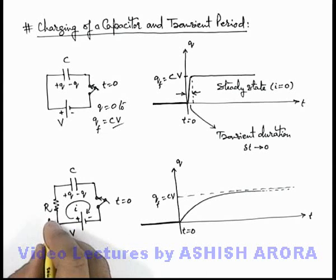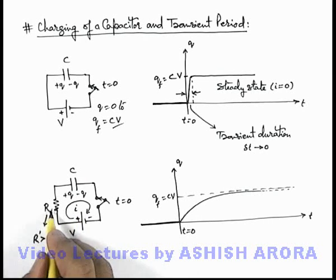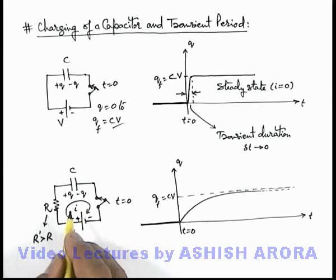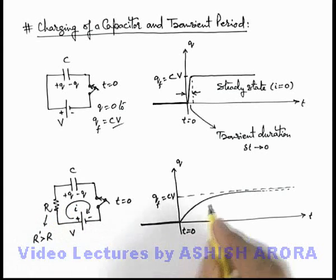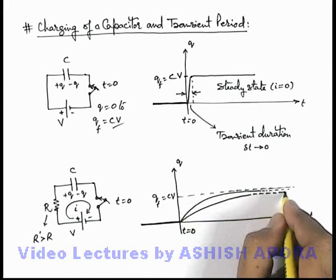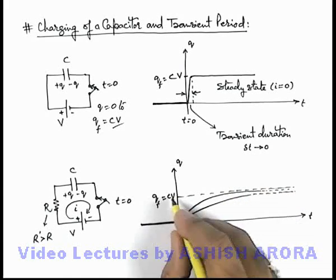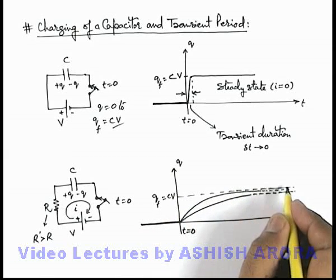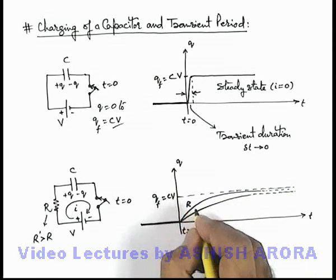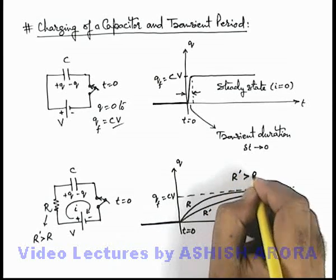Now if you increase the value of resistance from R to R' which is more than R, then if the resistance is increased, the current will further decrease and the charging will be slower. The curve will be of relatively lesser slope and will reach the value CV at a much later period. So if this curve is for resistance R, this is for R' where R' is greater than R.